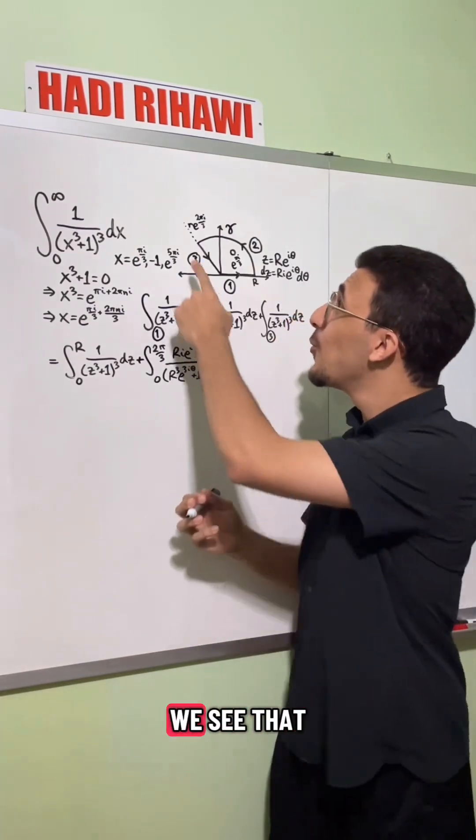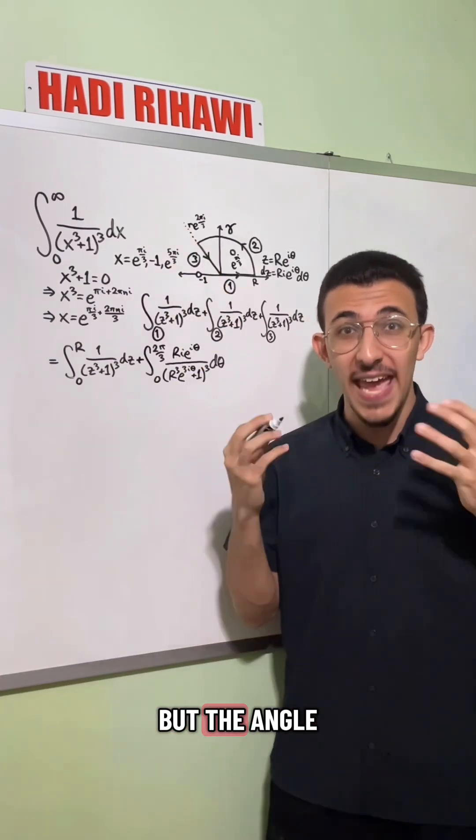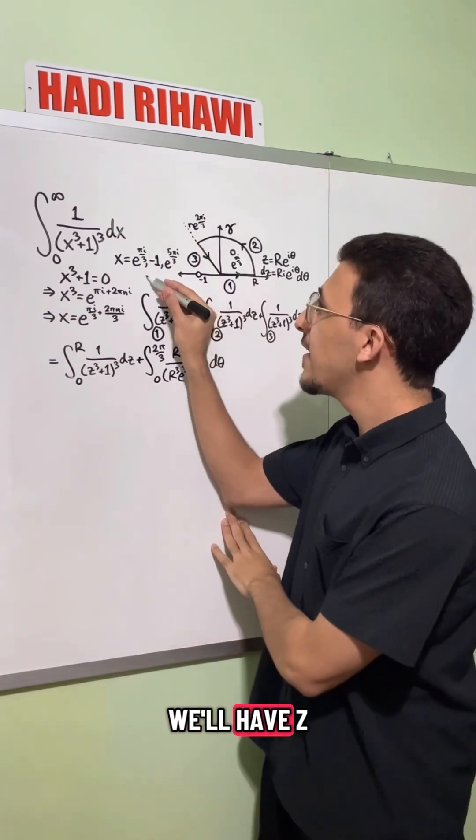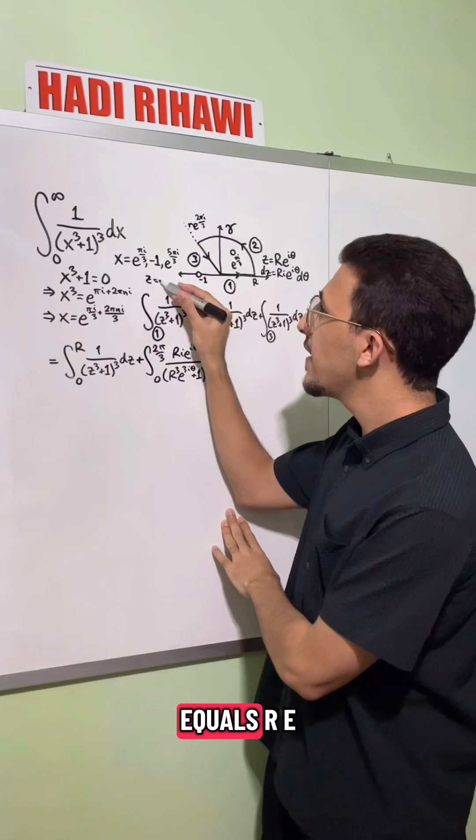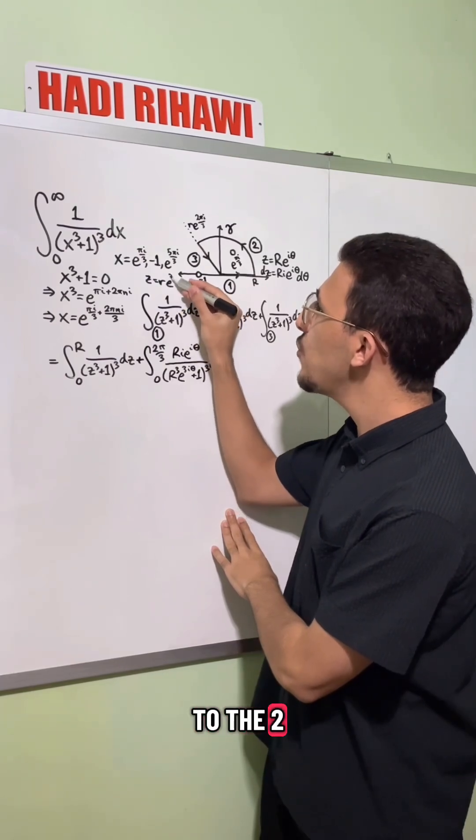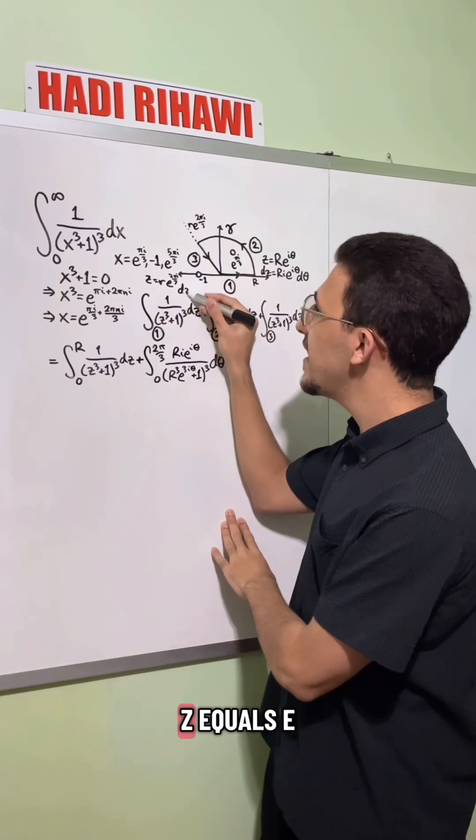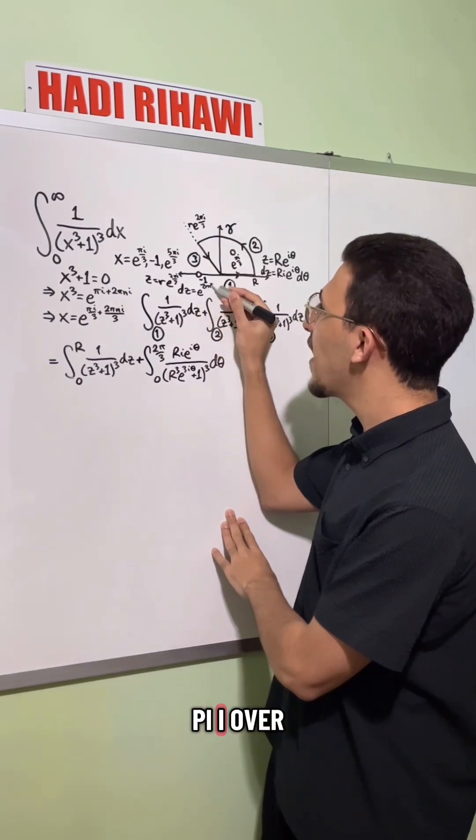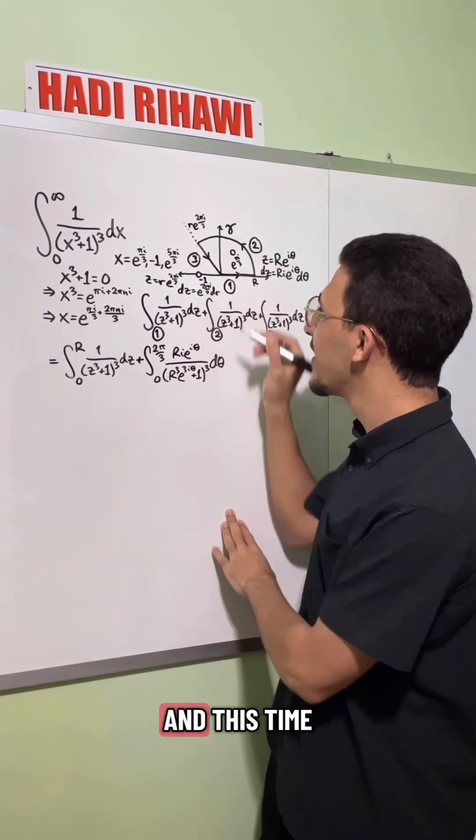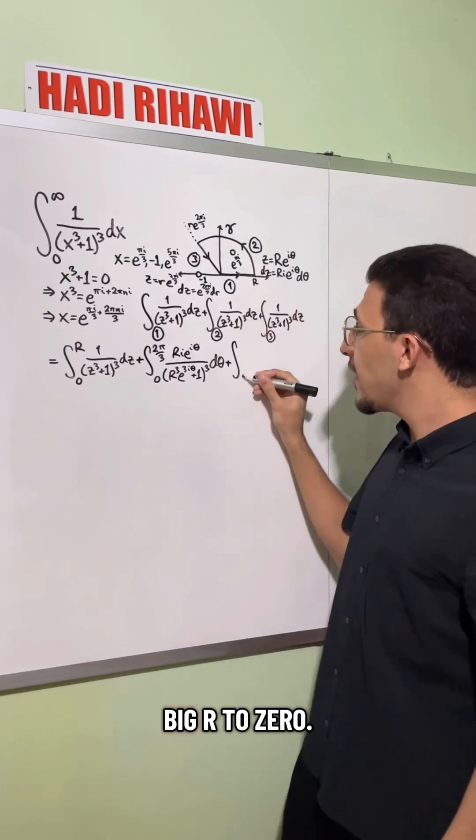And finally, on this last part, we see that the radius changes, but the angle is fixed. So we'll have z equals r e to the two pi i over three. And so dz equals e to the two pi i over three dr. And this time we're going from big R to zero.